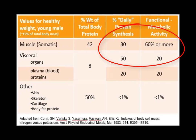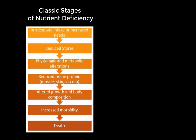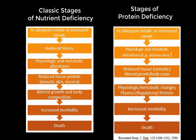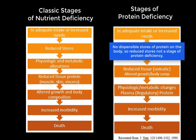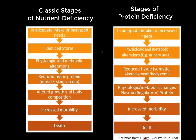Before looking at specific protein deficiency stages, let's review the classic steps of nutrient deficiency: inadequate intake or increased need, followed by pulling upon stores, then altered physiological and metabolic pathways, reduced tissue and protein production, altered growth and body composition changes, and finally increased morbidity and death. Comparing this to protein deficiency — the first step is the same: inadequate intake or inability to meet an increased need. The key difference is that unlike fat and carbohydrates, we have no dispensable stores of protein or amino acids, so there is no stage of reduced stores for protein deficiency.